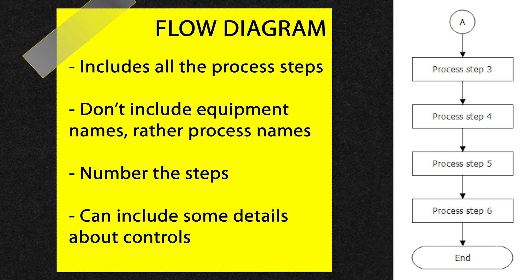The flow diagram can include some details like temperatures. For example, if we have a chiller, we can mention the temperature of that chiller. If we have a step of cooking, we can mention the target temperature of cooking as well. It should not list down detailed activities or equipment, because equipment can change and activities are not required in a flow diagram. It is a flow diagram, not a work instruction.